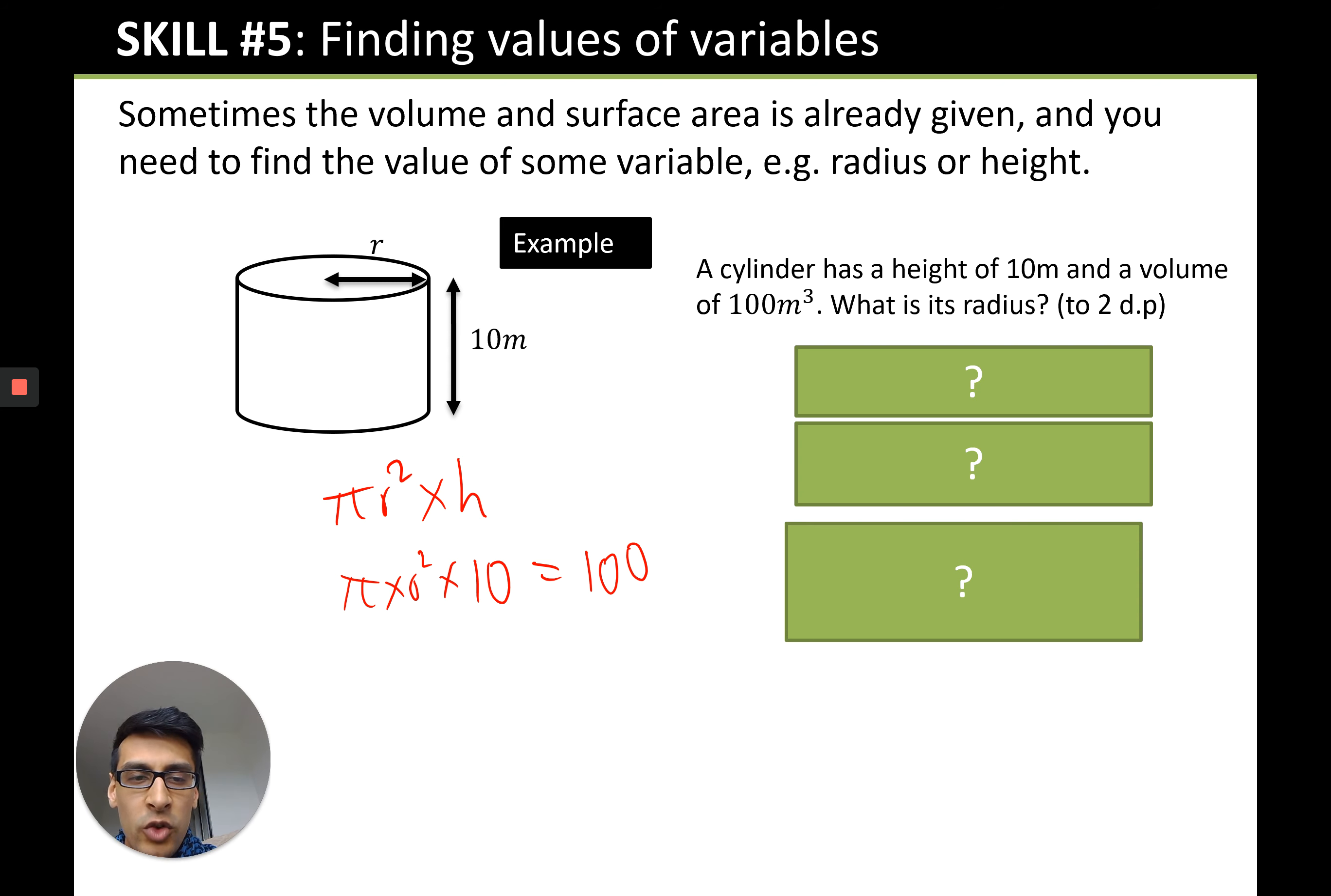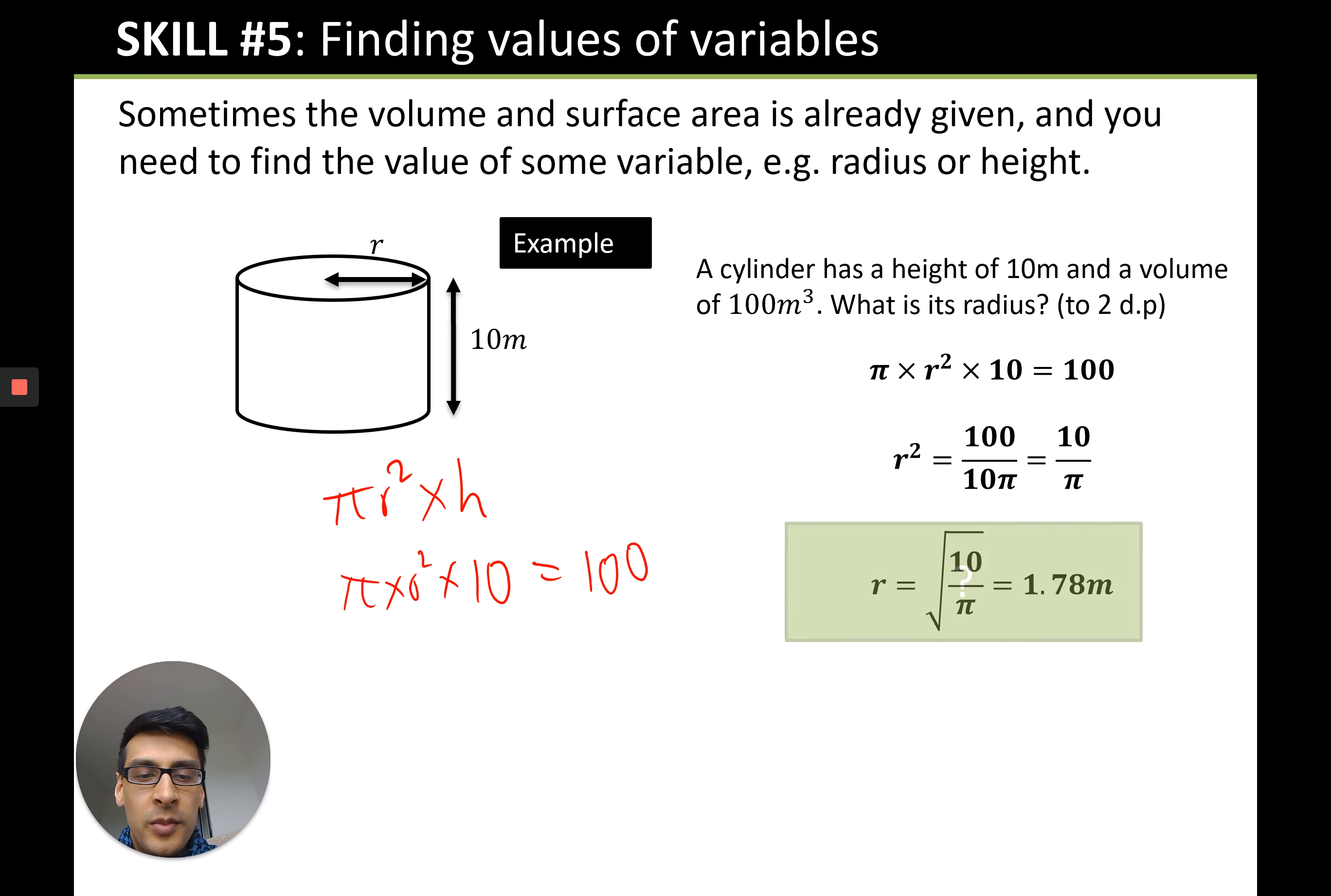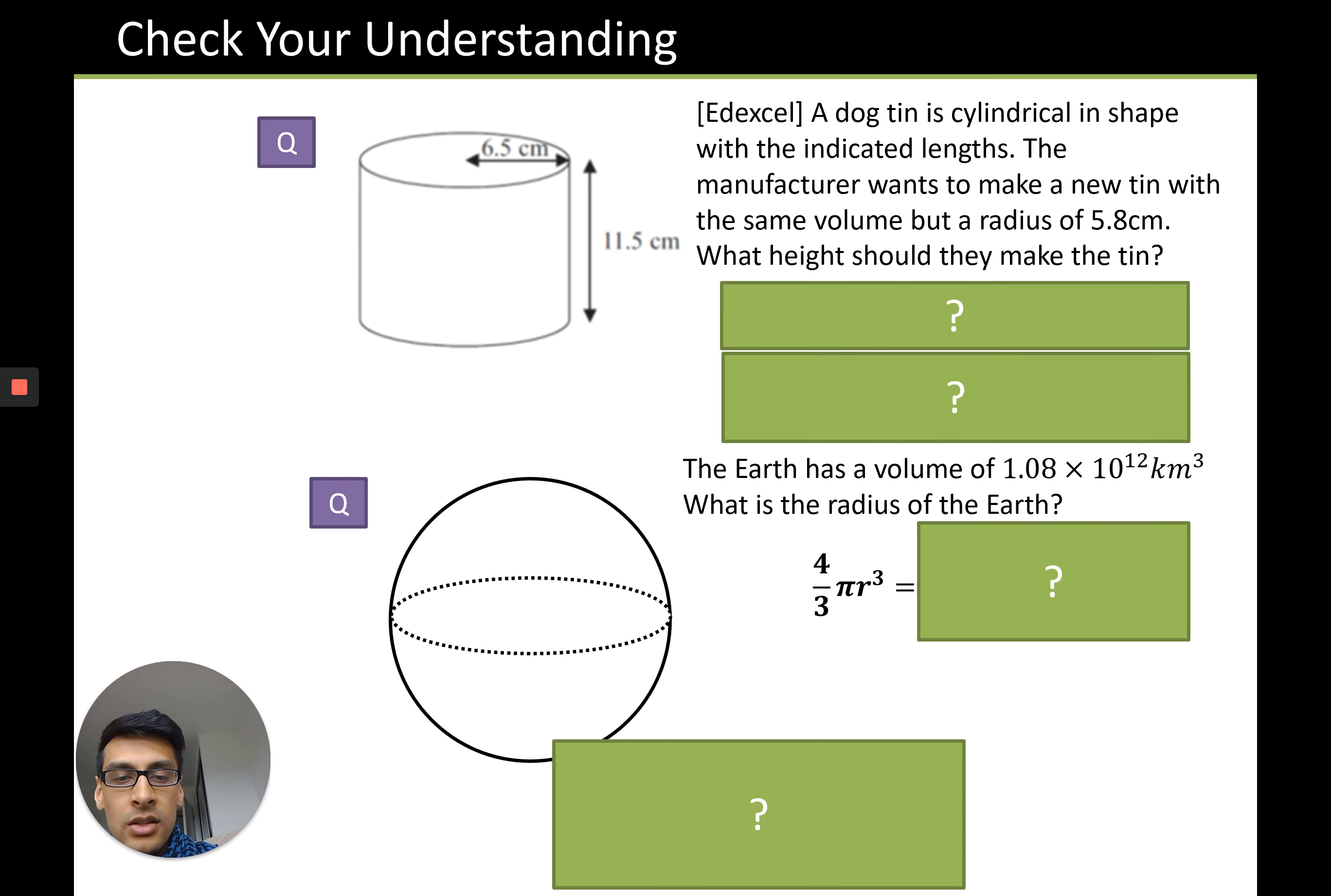Then you can just divide by 10 pi, square root it, and you get your answer which is 10 over pi square rooted was 1.78. So here's two examples that you need to do. I've given you the formula for volume of a sphere because you're going to need that for this. Have a go with both questions and then unpause the video.